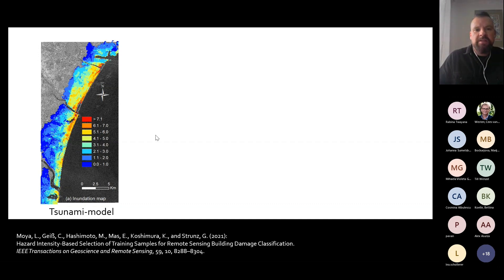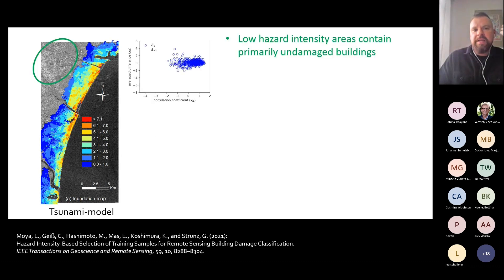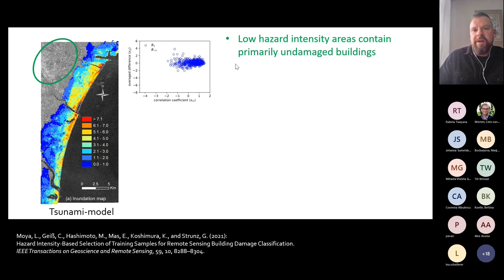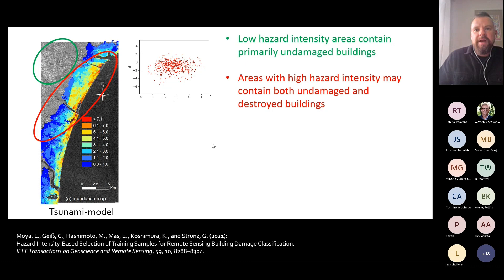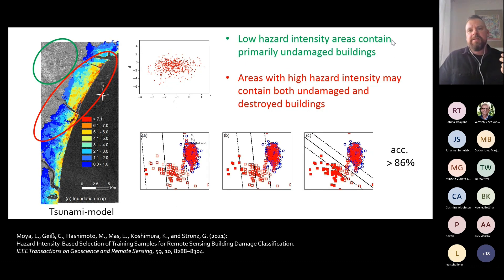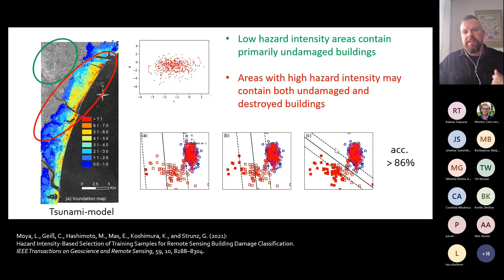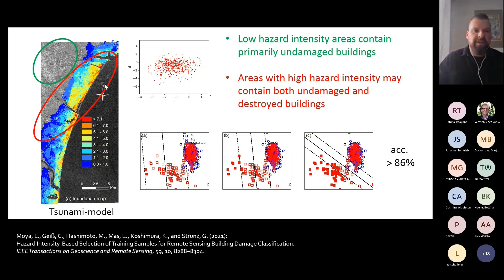Based on that tsunami hazard intensity model — which can be directly accessed always, therefore also minutes after such an event — we know that in low hazard intensity areas there must be primarily undamaged buildings, while in areas with high hazard intensity we eventually have both undamaged and destroyed buildings. We then simply started to learn such an algorithm iteratively, starting with the very extremes triggered by that hazard model to make that distinction regarding building damage. We obtained an accuracy above 85% — without providing any labeled data, but automatically labeling samples as undamaged or damaged under consideration of the hazard intensity model.